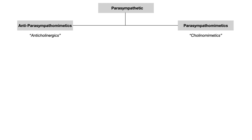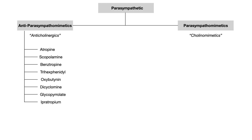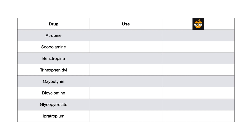The anti-cholinergic agents you need to memorize for medical school exams, USMLE, and COMLEX are: atropine, scopolamine, benztropine, trihexyphenidyl, oxybutynin, dicyclomine, glycopyrrolate, and ipratropium or tiotropium. All of these drugs are anti-cholinergic — they all block muscarinic receptors, specifically M1, M2, M3, M4, and M5.